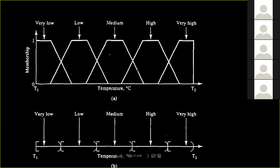Fuzzy sets don't give exclusive membership; they tell you for each temperature how likely it is to be in the set. You might think that sounds exactly like probability theory — and it does. But fuzzy set theory is actually a generalization of what probability theory can do. I'll come back to that distinction later.